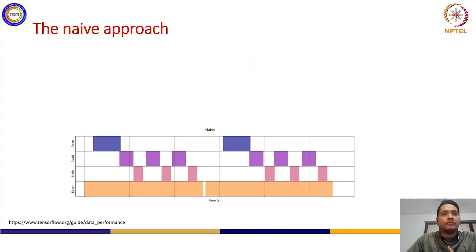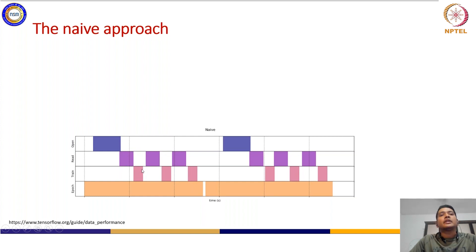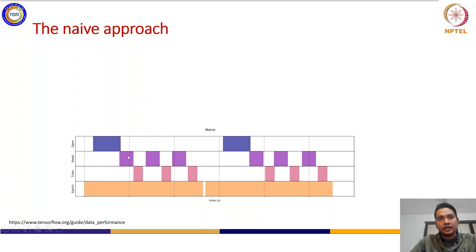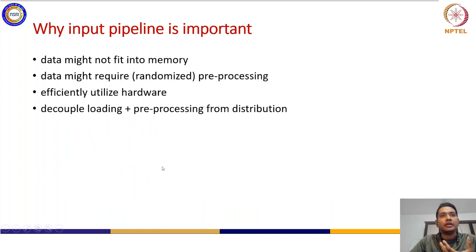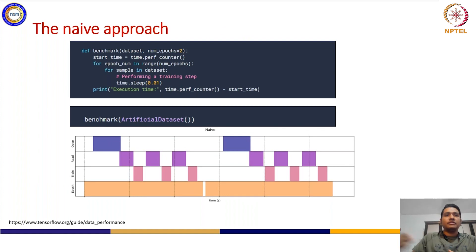The naive way to do this: first you open your data file, then read a chunk of data depending on the size you want in memory, feed that to your training module, train it, then again read the data, train again, and repeat. This is a simple sequential way of doing things - this is not a pipeline yet. If you do not apply efficient pipelining this is what happens.